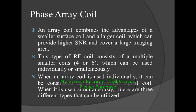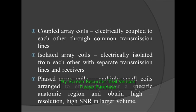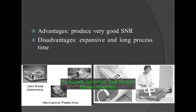Phased array coils: an array coil combines the advantages of a smaller surface coil and a larger coil, providing higher SNR and covering a large imaging area. This type of array coil consists of multiple small coils which can be used individually or simultaneously. When used simultaneously, there are three different types: coupled array coils, which are electrically coupled to each other through common transmission lines; isolated array coils, which are electrically isolated from each other with separate transmission lines and receivers; and phased array coils, where multiple small coils are arranged to efficiently cover a specific anatomic region and obtain high-resolution, high signal-to-noise ratio in a larger volume. Advantages include very good SNR; disadvantages include being expensive and having a long process time.